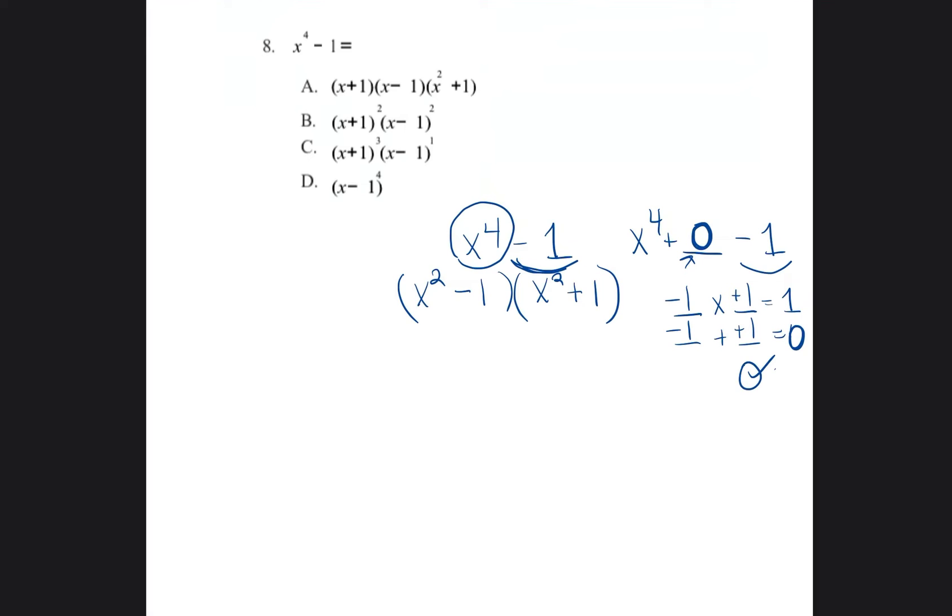I'm going to look at these to see if I can break them down even further. Looking at the first one, x squared minus one: if it was written as a trinomial, it would be x squared plus zero minus one. There's nothing here, so it's a zero.